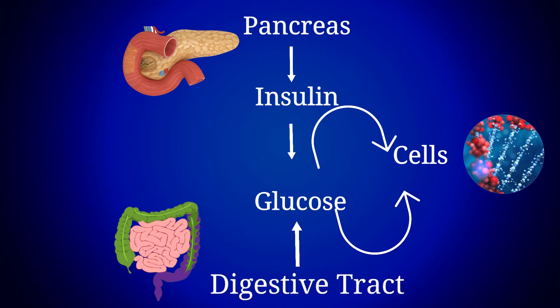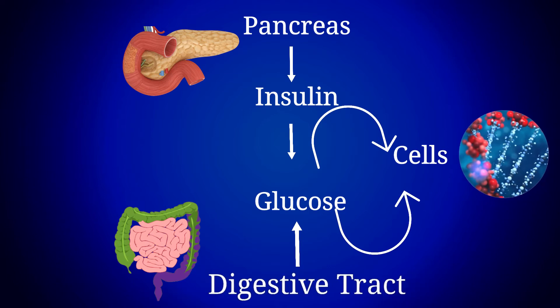I hope it will be clearer from this flow chart. Prolonged high blood sugar levels lead to many complications such as blindness, kidney failure, stroke, heart attacks, and lower limb amputations.